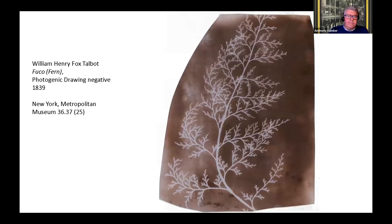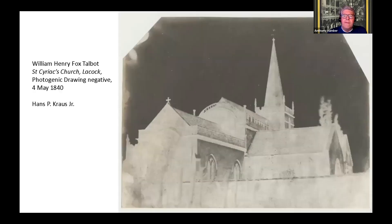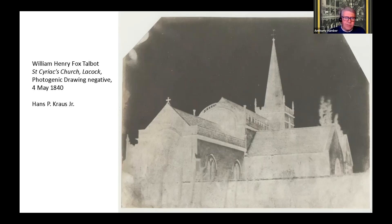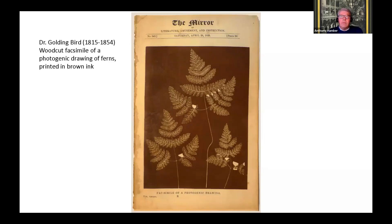Looking at the earliest photographic drawing processes other than the daguerreotype: the first that Talbot invented was the photogenic drawing — really just a direct contact print process. Here's an example of a fern. You could also produce photogenic drawing negatives — this is St. Cyriac's church in Lacock taken by Fox Talbot — and a positive print could be made by contact printing with another sheet of photosensitized paper: a negative of a negative equals a positive. This illustration is not a photogenic drawing — it is a woodcut copy made after one.